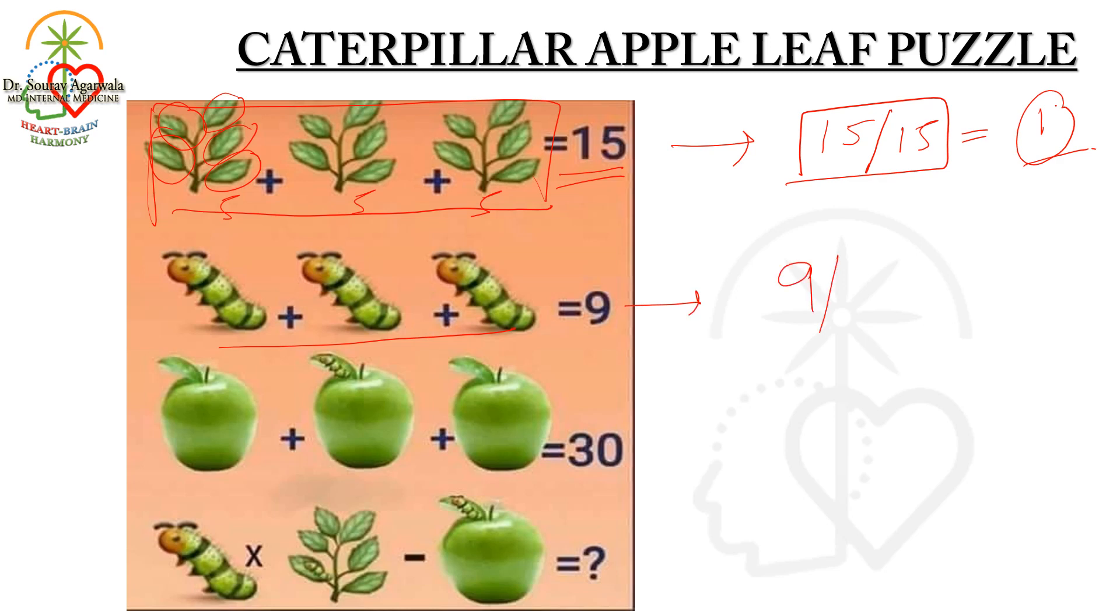Now we can see there are three apples and one caterpillar, and the total value is 30. So 30 minus one caterpillar, that is 3, equals 27. And there are three apples, so the value is 9. Each apple value is 9.